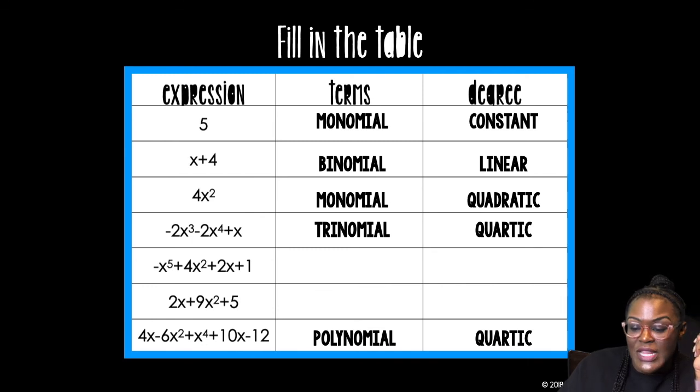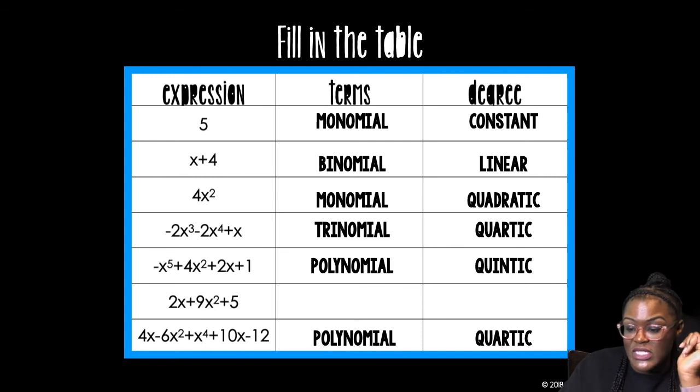Alright, let's go through the last one. I have four terms. There's no fancy name. I just call that polynomial. The highest exponent, the degree is five. So I call that quintic. And then I have three terms. So that's a trinomial. The highest degree is a two. So I call that quadratic.